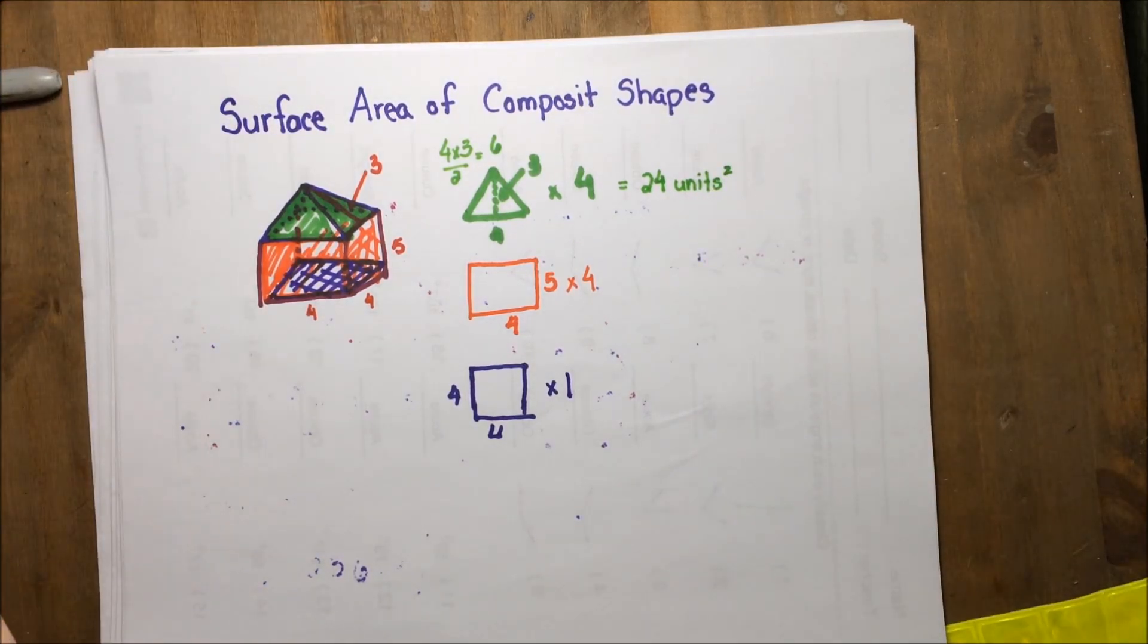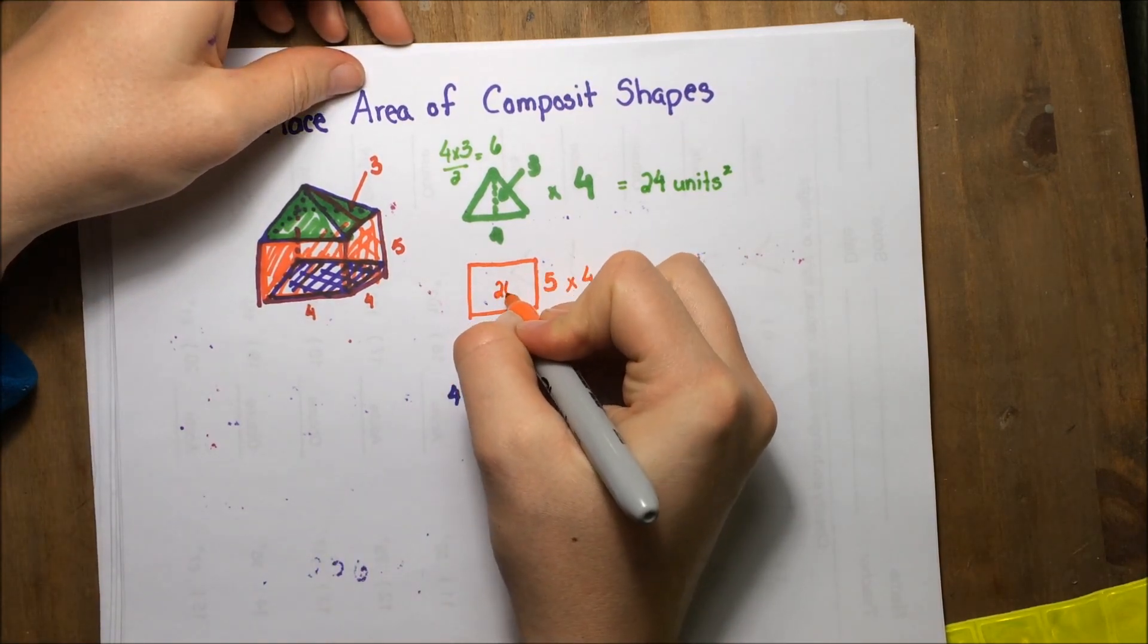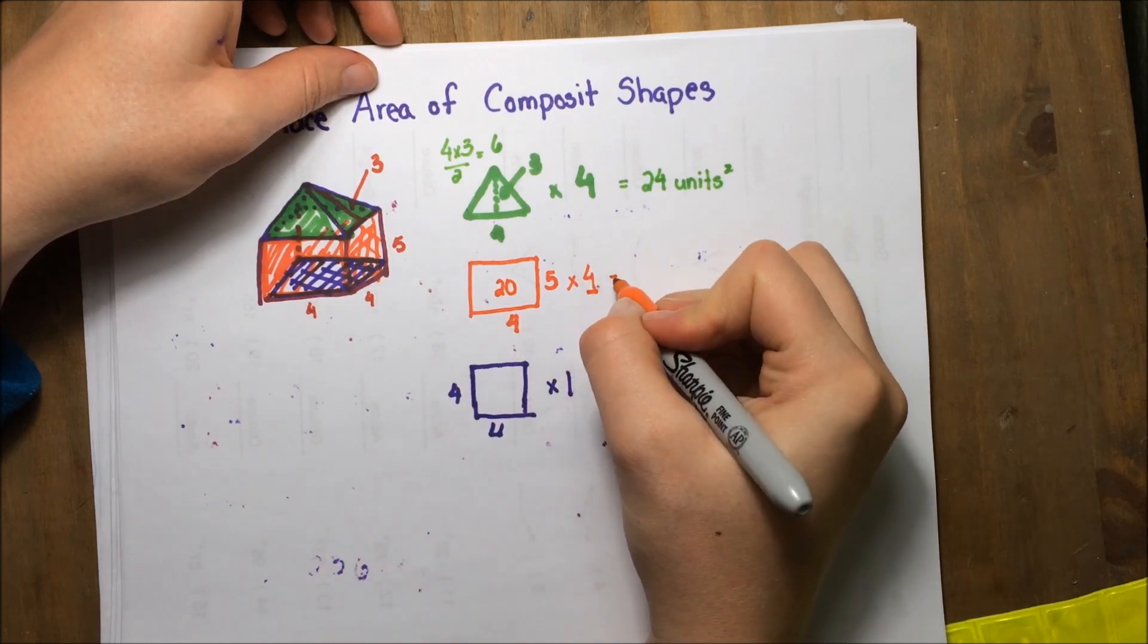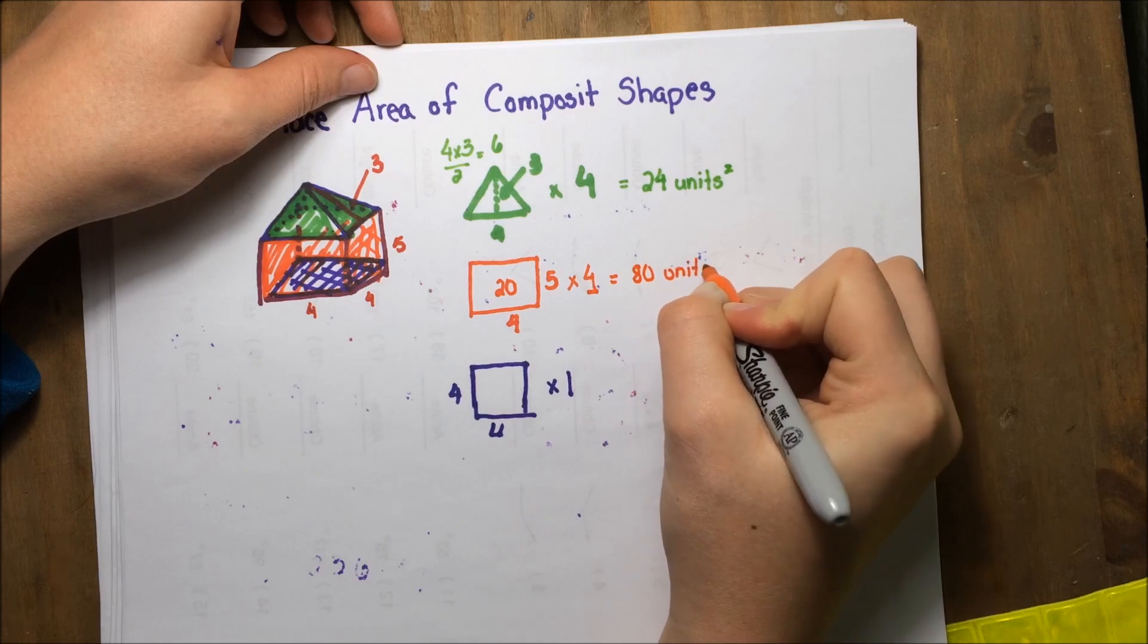My next shape is this rectangle. It's a five by four, so that gives me 20 units squared for one. There's four total, 20 times four is 80 units squared.